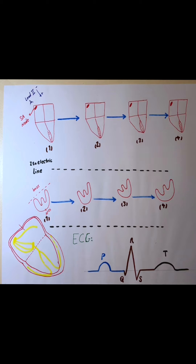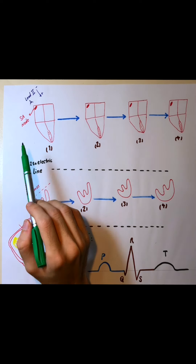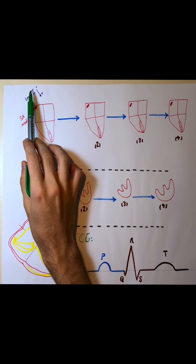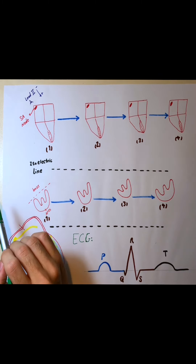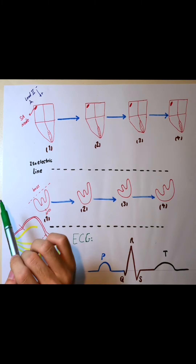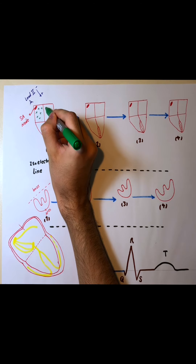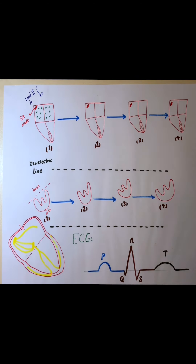We have this simplified heart with its SA node depicted, and we're going to see all sections of the heart through Lead 2, which you can see its direction. At the first stage, our heart is all polarized, so the surface of the SA node is all positive because all cells are at rest, and at rest all the surface is positive.